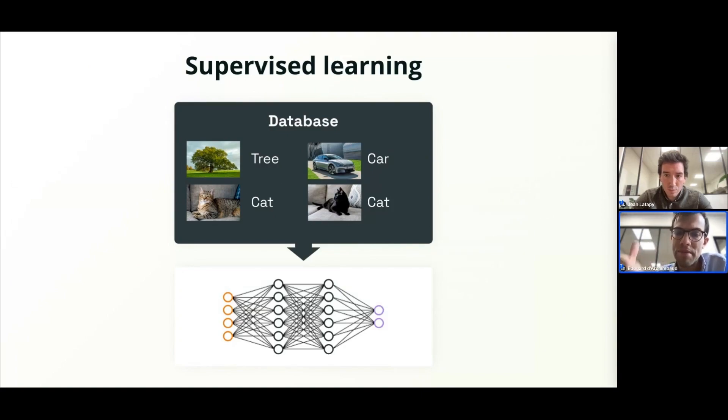And so this optimization is directly aligned with the fact of not making errors when it comes to classifying images, for instance, here.